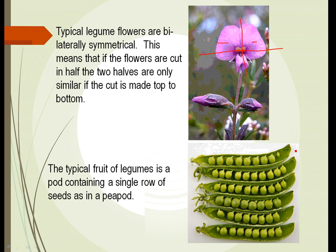Down below you can see a typical fruit. These happen to be peas in a pea pod. You have a single row of seeds arranged in a pod, and that's typical of almost all legumes.